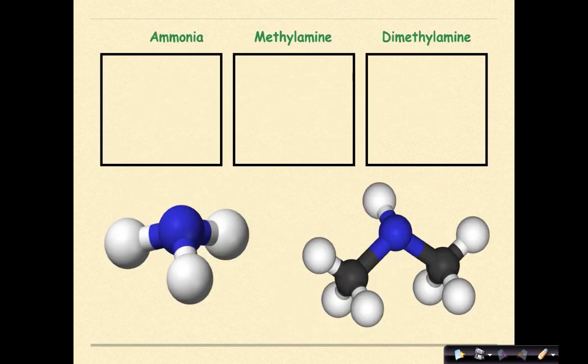Let's start off with ammonia. We know ammonia is N and then three hydrogens. So one, two, three, with a lone pair over the nitrogen.